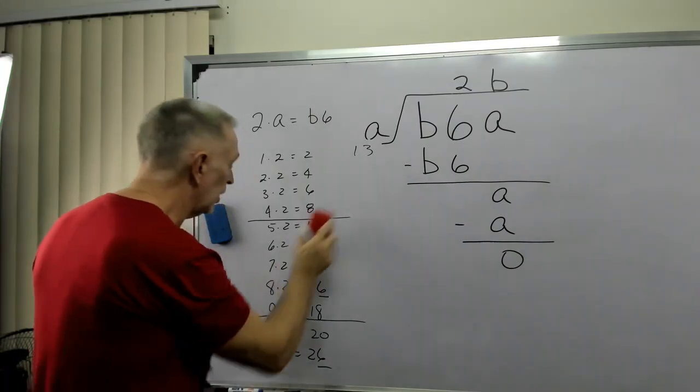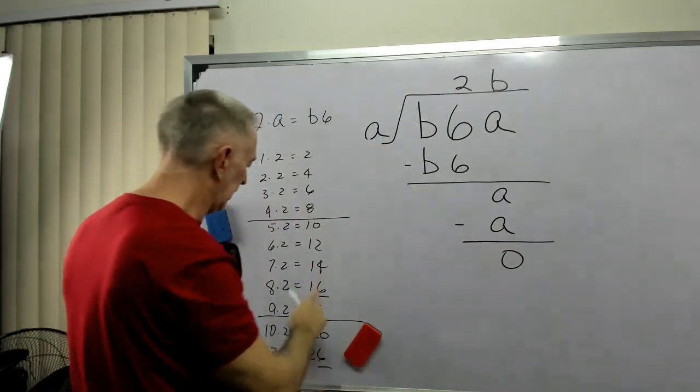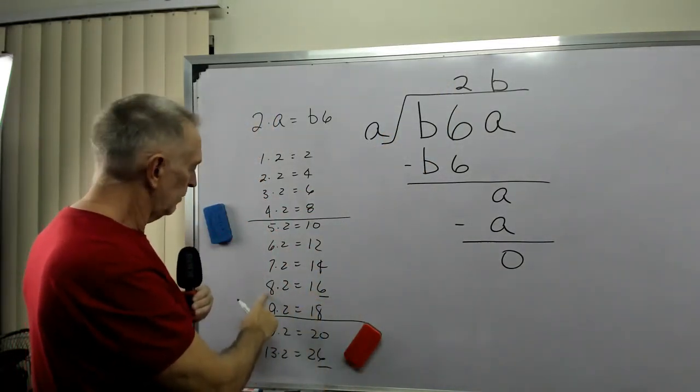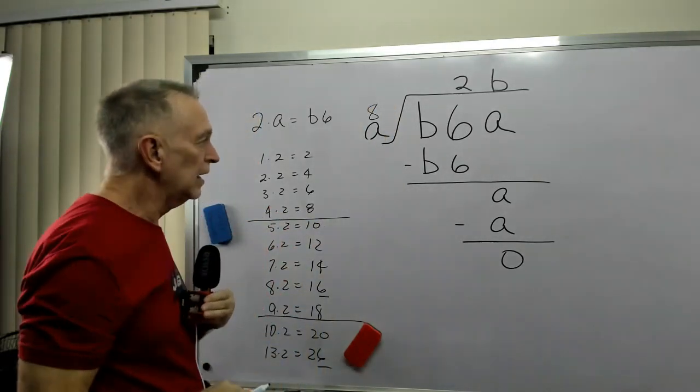Well, which number is in here gives me times 2, gives me the ones digit that's a 6? It's 8. So it appears to be that A equals 8.